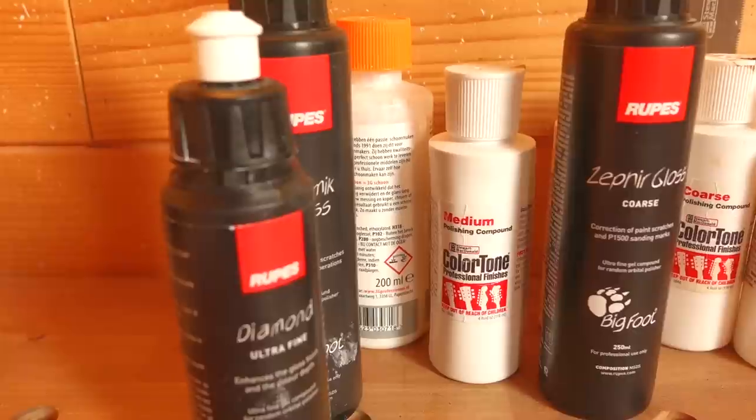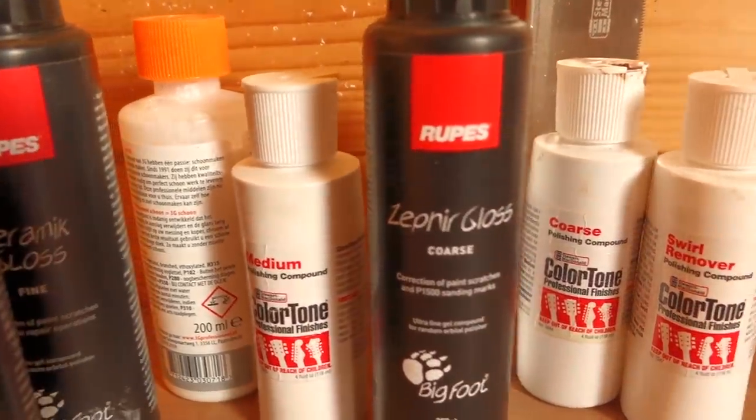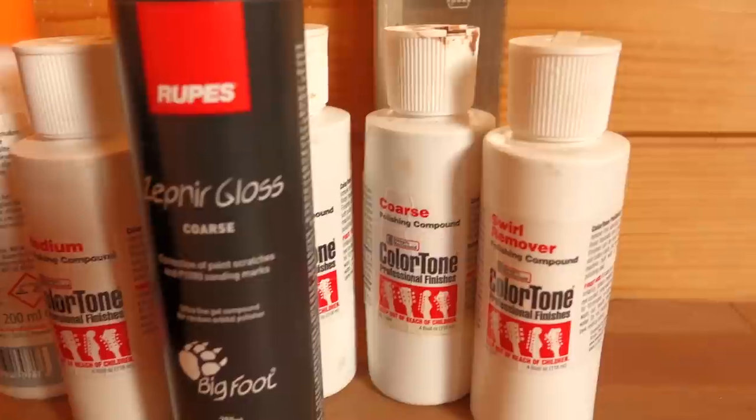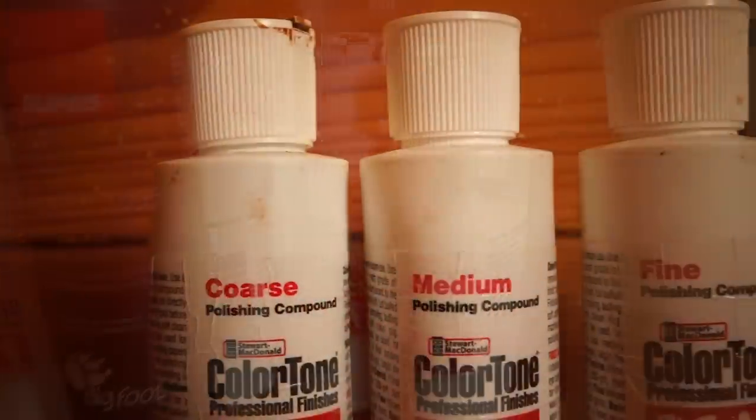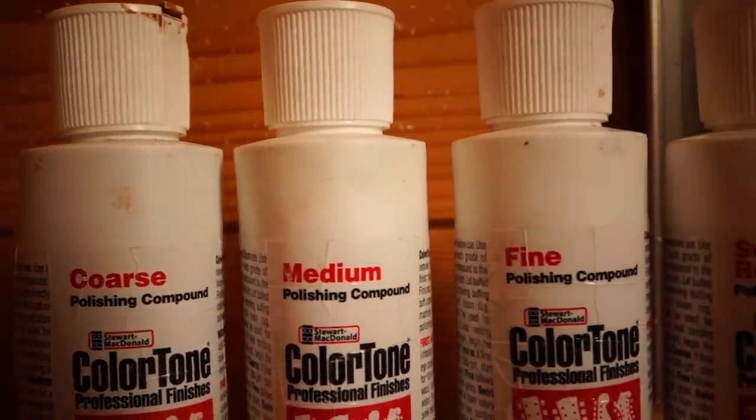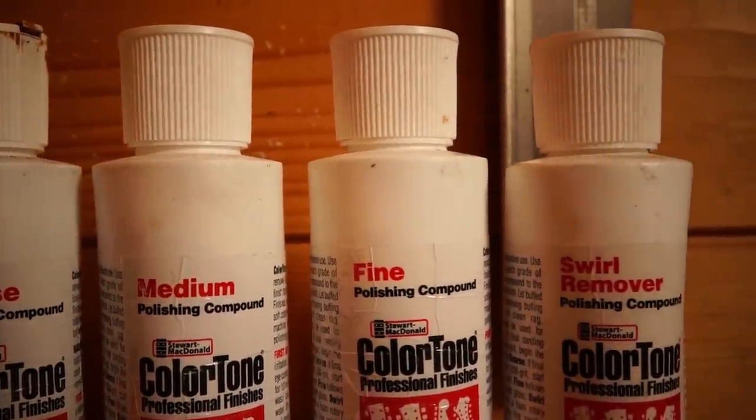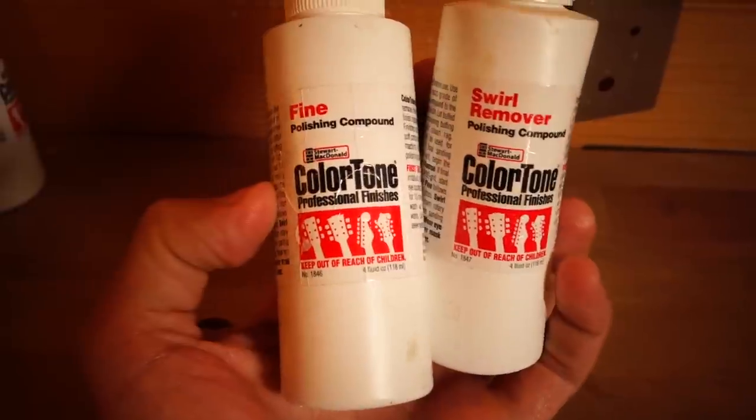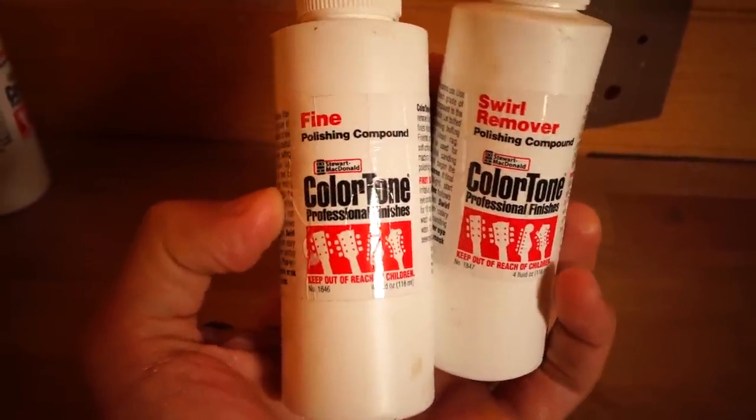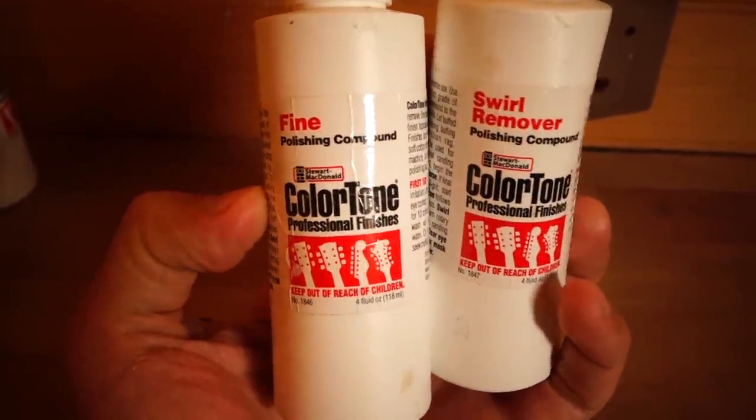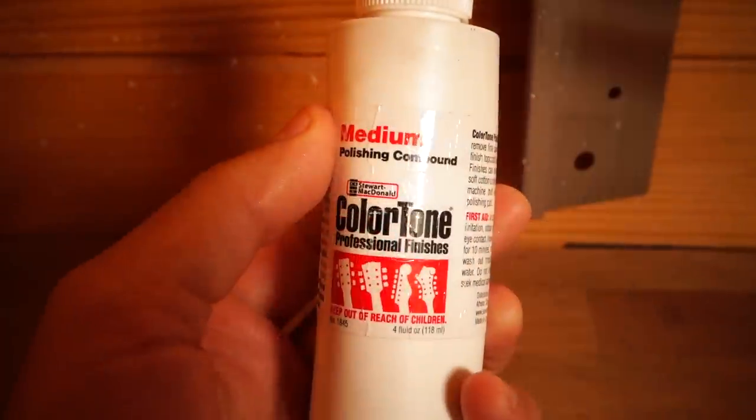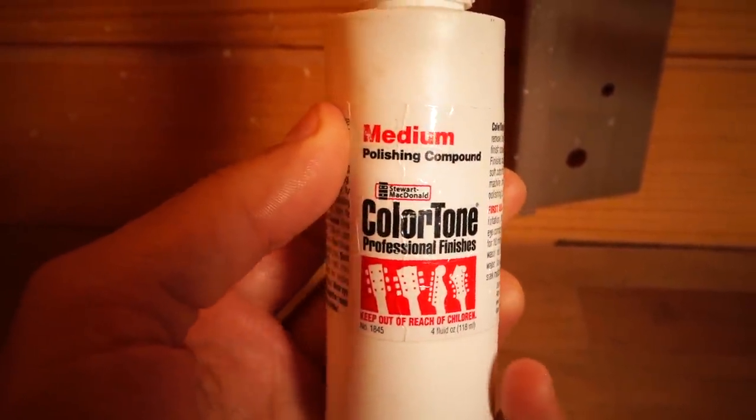There are a variety of polishing compounds available on the market but as I mentioned in part one of this tutorial I will be using the Stew-Mac polishing compounds simply because they're available practically worldwide. If you've done a good job sanding you'll only need the fine compound and a swirl remover. If you come across any major scratch marks during the polishing process you might need the medium compound to rub those out as well.